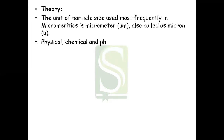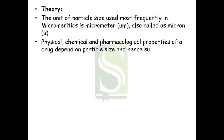We have already prepared granules of calcium carbonate with starch. Now let us see what is the use of sieve analysis and why it is used. In theory, the unit of particle size used most frequently in pharmaceutical micromeretics is micrometer, also called as micron. The physical, chemical, and pharmacological properties of a drug depend on the particle size and hence the surface area of the particle.